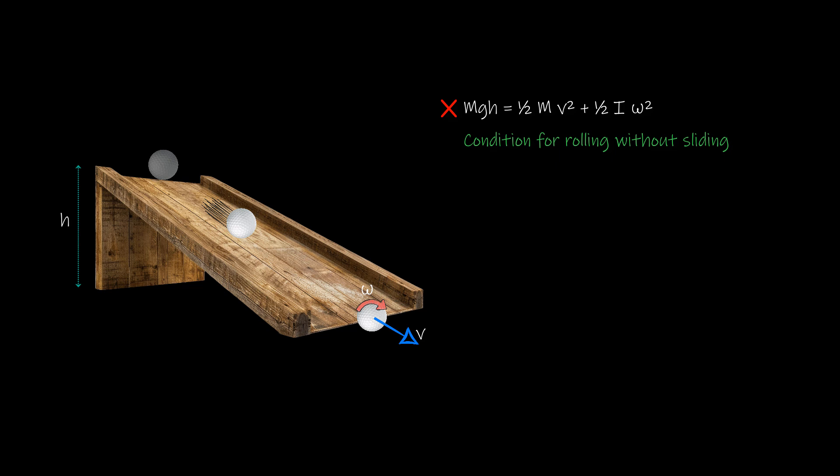However, energy conservation will always hold true and this equation will then have to be modified to include heat loss by putting E thermal loss on the right-hand side. Now, we move on to a slightly more conceptual part of this lesson and that is how forces play out in rolling motion.